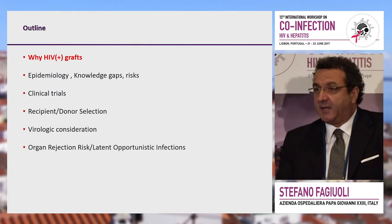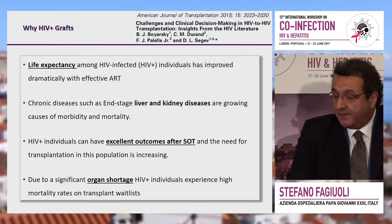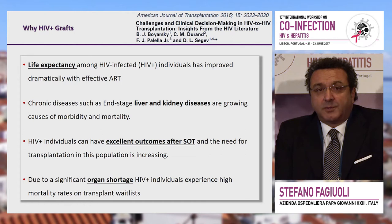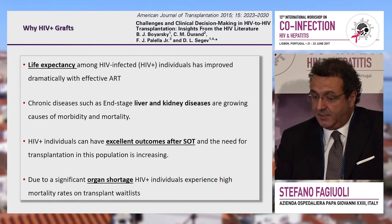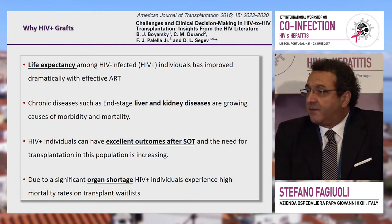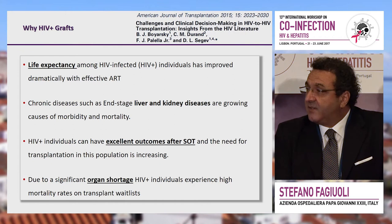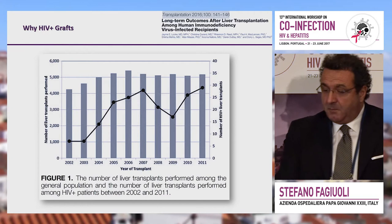Now let's move to HIV positive grafts, which represent a new frontier. Life expectancy among HIV-infected individuals has dramatically improved in recent decades. However, those patients are prone to die from liver and kidney disease, because of the high prevalence of HBV and HCV co-infection. They do have excellent outcomes after solid organ transplantation, as several series testify. Since we have a shortage of organs, using HIV positive organs is an excellent way to expand the pool.